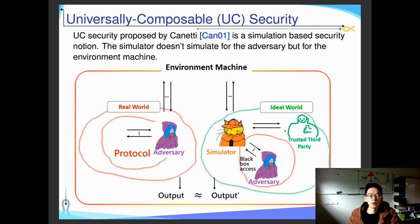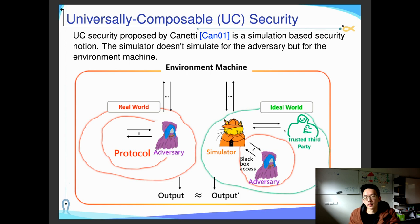So if you can show that your protocol in the real world is indistinguishable from the one created by the simulator in the ideal world, then you can say that your protocol has UC security.